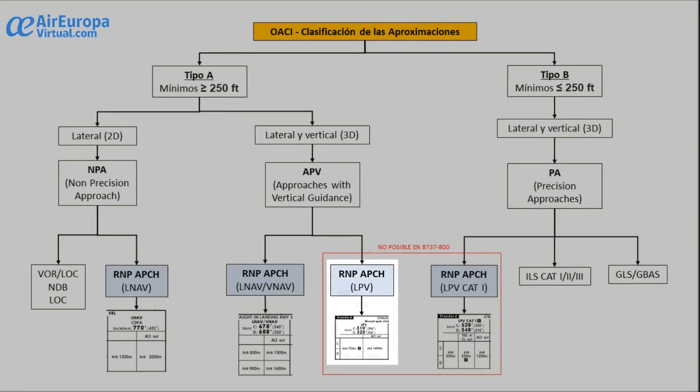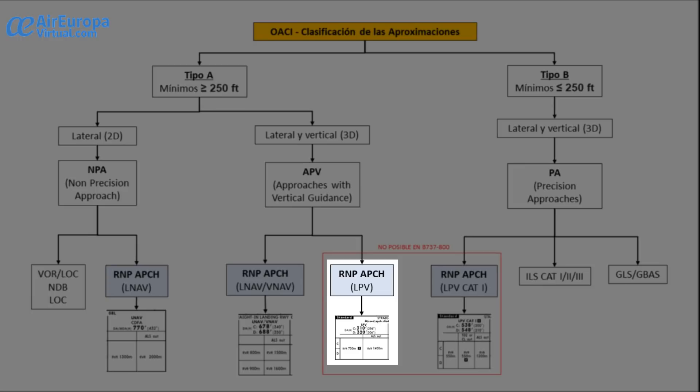Within the APV approaches we have the LPV approach, where the minimums are reduced. This type of approach requires special equipment on board to tune into the EGNOS channel associated with that approach. This is basically a GNSS signal augmentation system that allows greater precision.